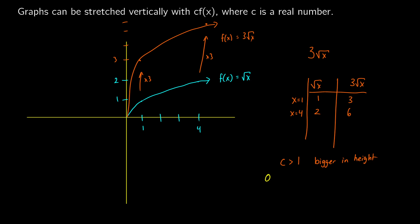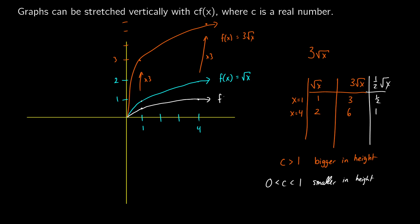If we pick a number between 0 and 1 — say one half root x — what happens? If x equals 1, we get 1 times one half. If x equals 4 that should be 2, but we get one half times 2 which is 1. So using a fraction makes it smaller, or shorter, in height. At the point 1, 1 we should be getting halfway up. At 4, 2 we get the point 4, 1. So the graph is f of x equals one half root x. The bigger the number the higher it's going to be, the smaller the number the lower it's going to be compared to your original function.